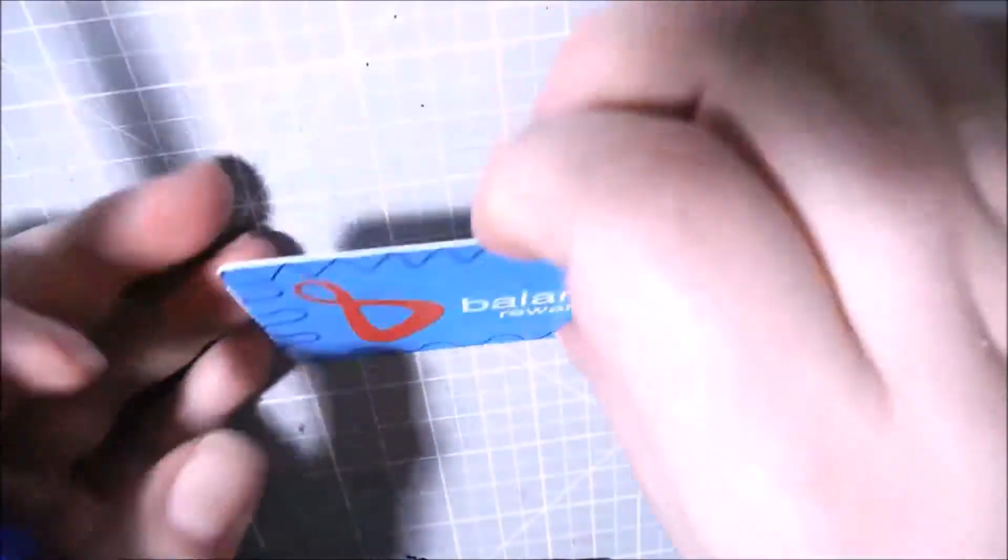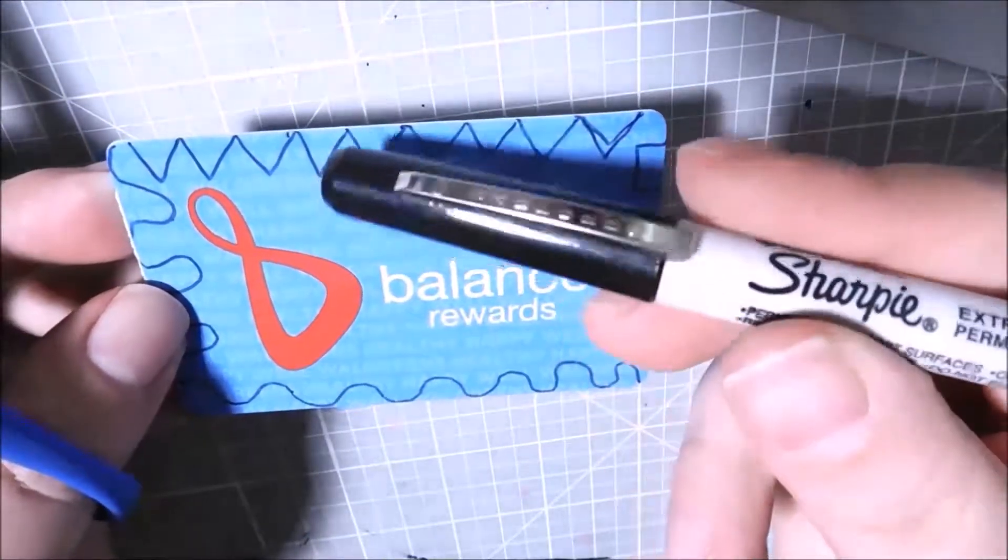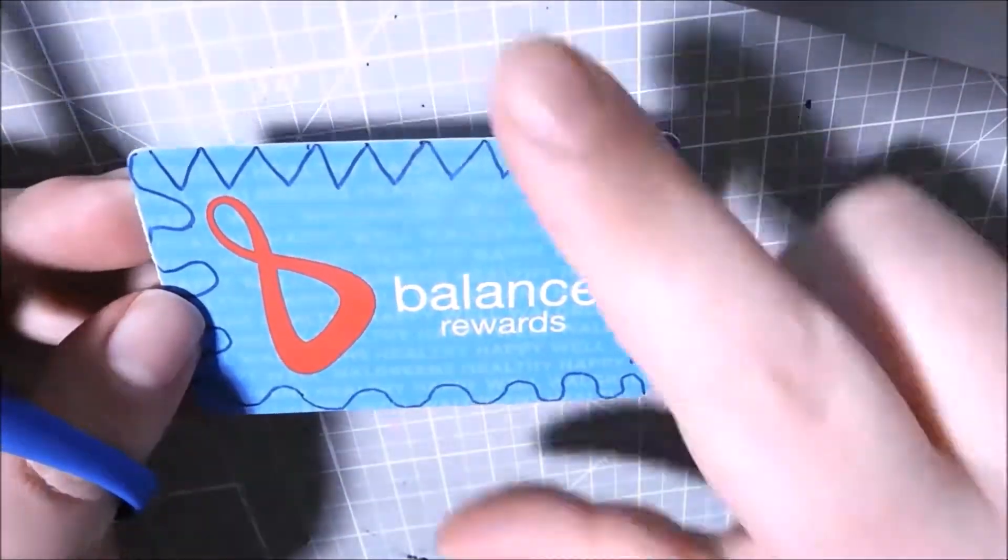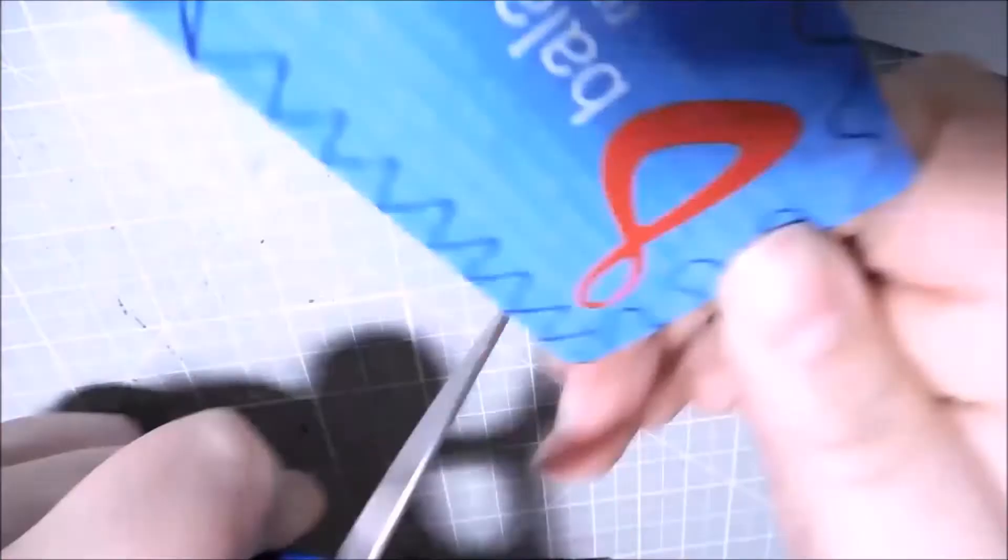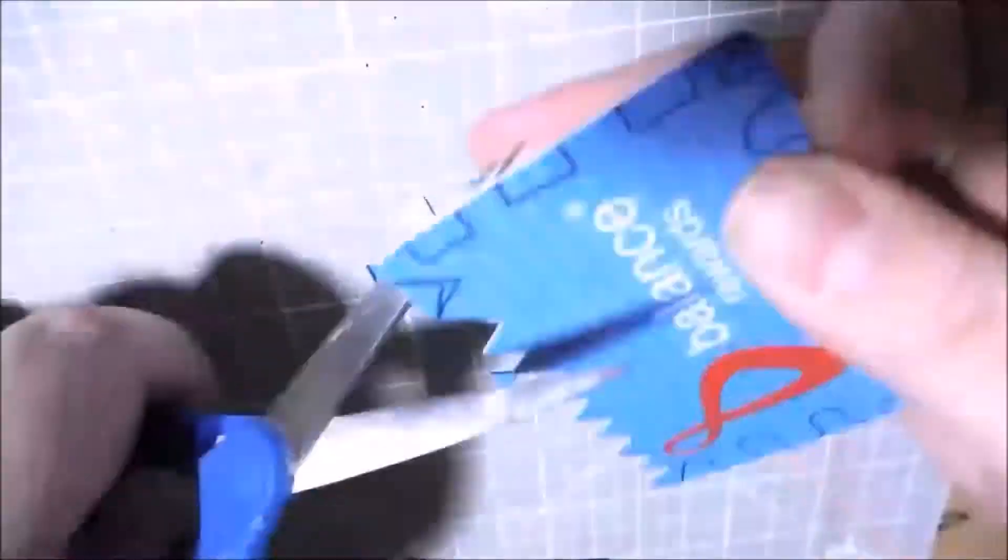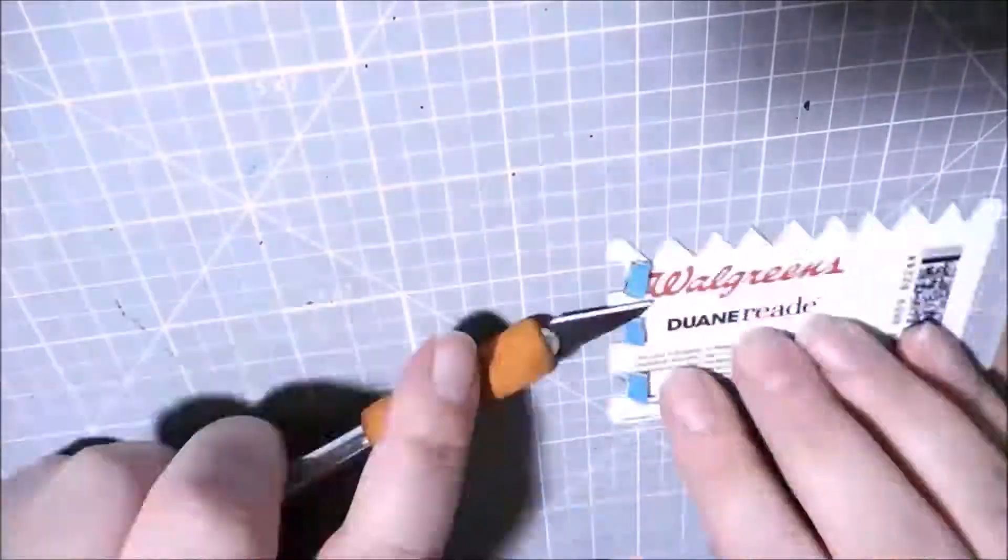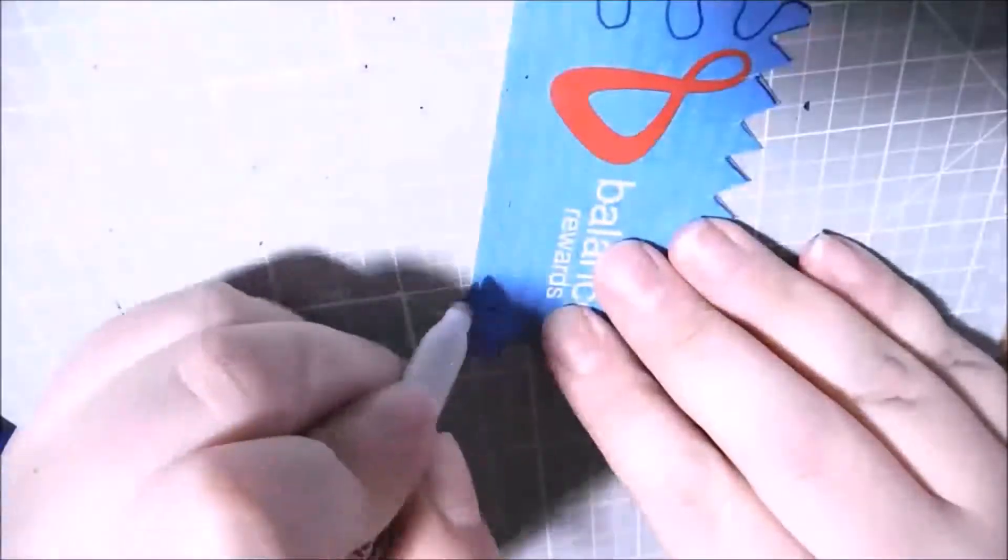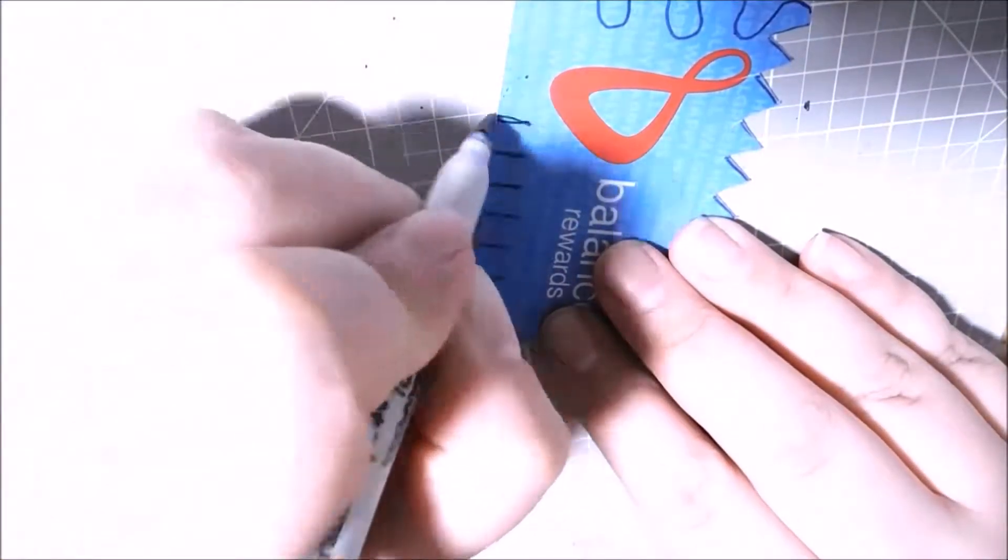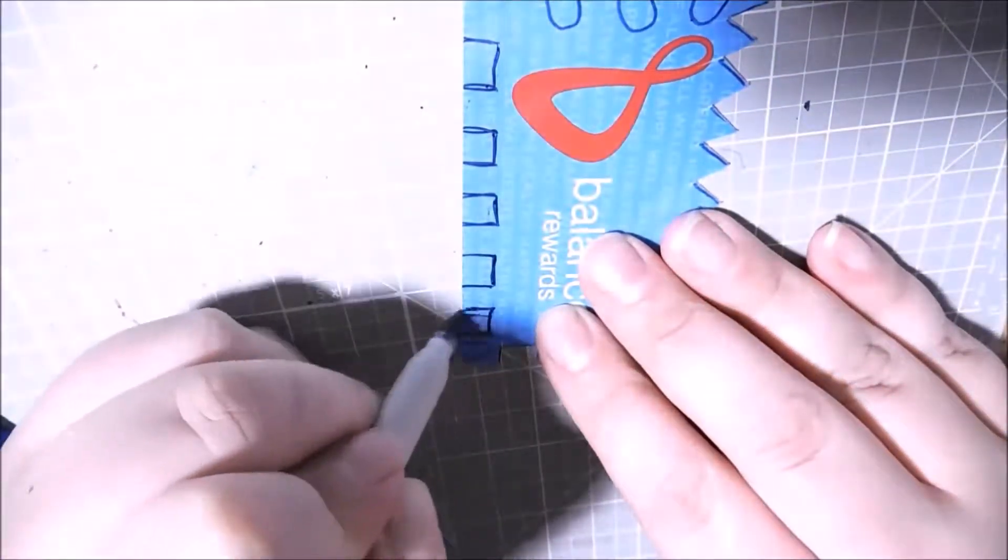You can see I already have my balance rewards card here that I never use. I've scribbled some patterns on here so that I can cut them out. I did kind of a zigzag so I could have some very triangular textures and very thin lines. I did some curvy ones. I did some wider just regular triangle or rectangle shapes.